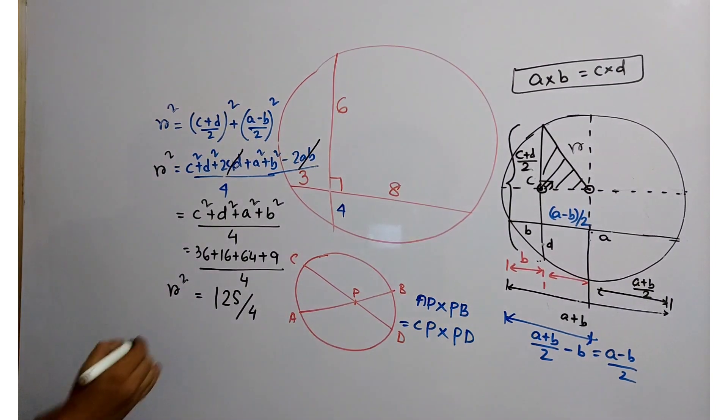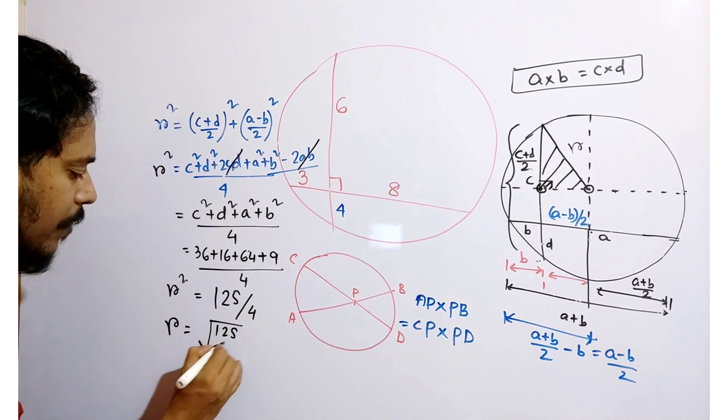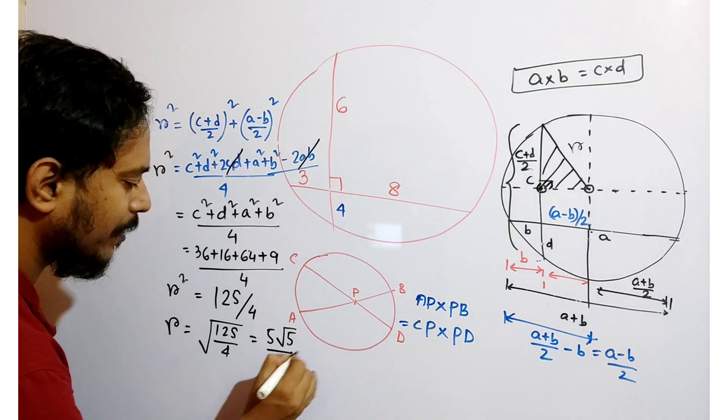Which is equal to R square. So what will be the value of R? R will be root of 125 by 4. That means 5 root 5 by 2 units.